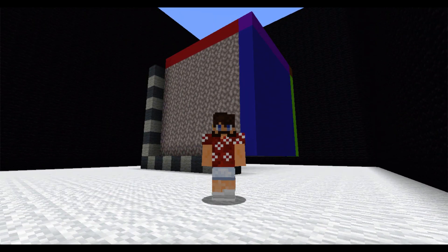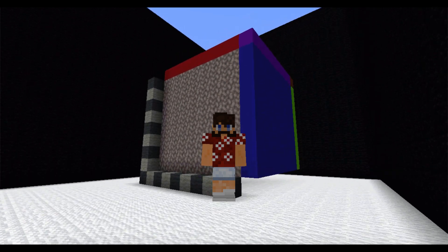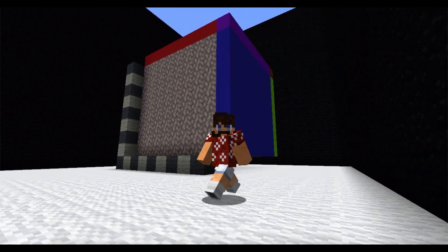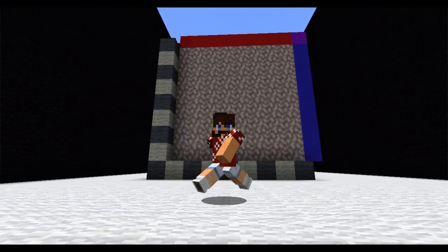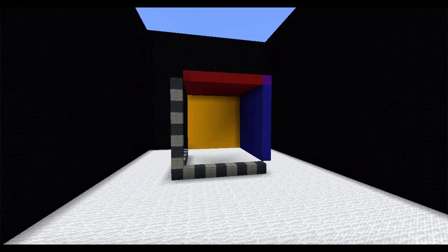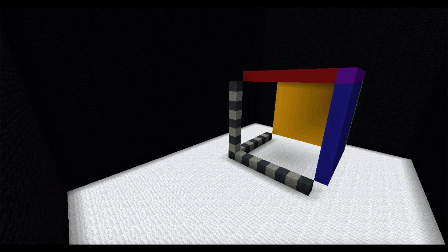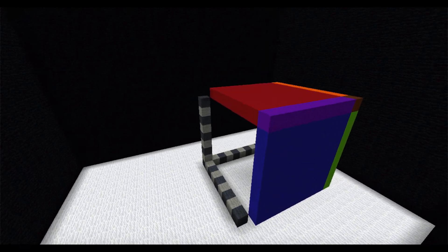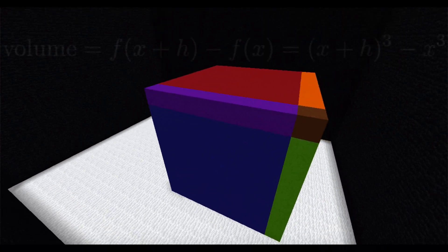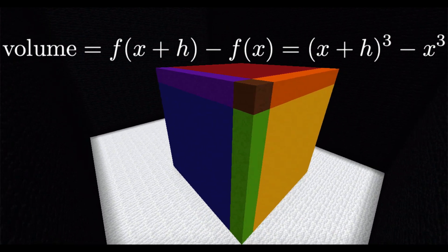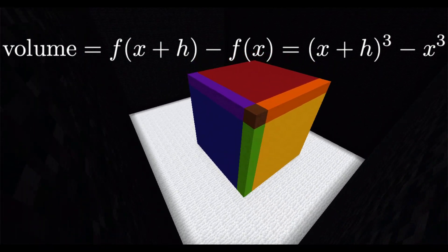So now that we can visualize f of x plus h and f of x, let's take their difference. And what we're left with is just the colored shell. All of the gray blocks are removed. The volume of these blocks is f of x plus h minus f of x.